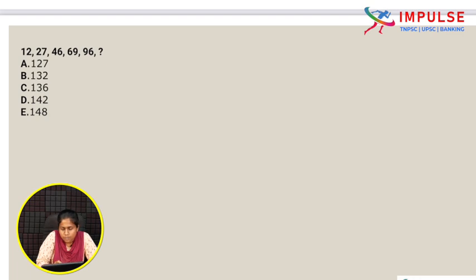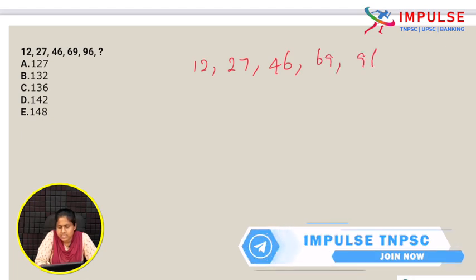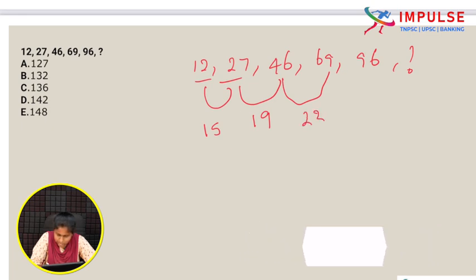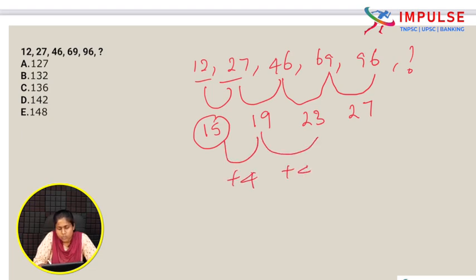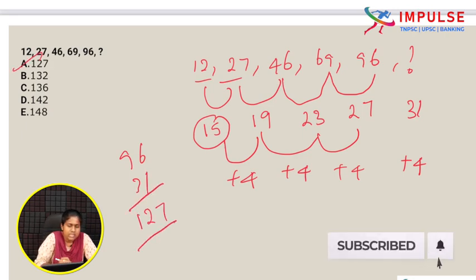Next question: 12, 27, 46, 69, 96, ?. The differences are: 15, 19, 23, 27. The logic is these differences increase by 4 each time: 15, 15+4=19, 19+4=23, 23+4=27, 27+4=31. So 96 plus 31 is 127. Option A is the right answer.